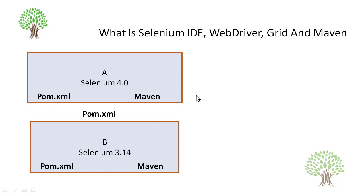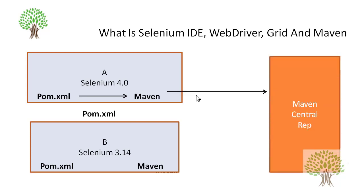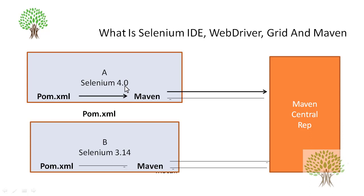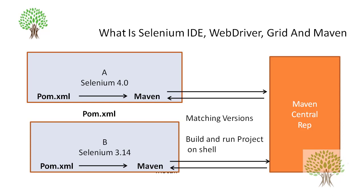What Maven will do is go and read this pom.xml. It will read that TestNG this version is required, Selenium this version is required, and then it will go and connect to the online Maven central repository. There are central repositories on the internet. It connects to them and downloads those particular dependencies with those particular versions on your PC. This way, if all team members have the same pom.xml, all team members will have the same versions. That's the primary objective of Maven — it ensures matching versions.